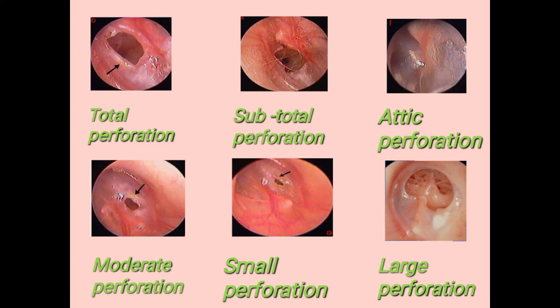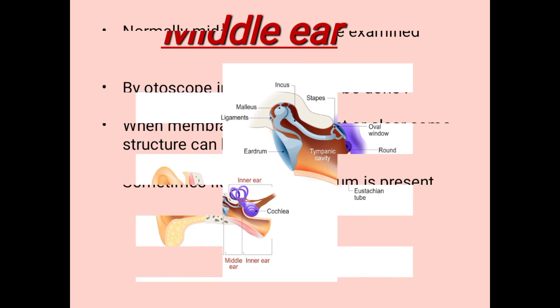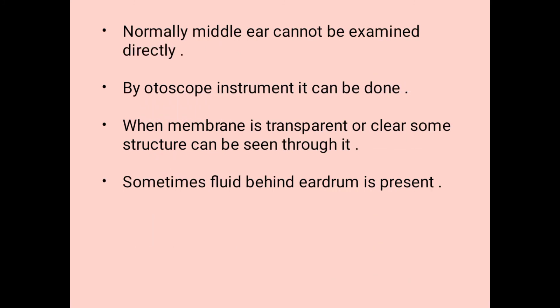The middle ear is where the three ossicular bones are present. Normally the middle ear cannot be examined directly by otoscope; it can be examined when the membrane is transparent or clear, and some structures can be seen through it. Sometimes fluid behind the eardrum or tympanic membrane is present, which can cause disease.